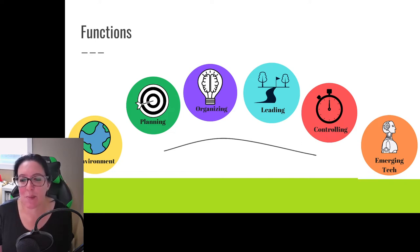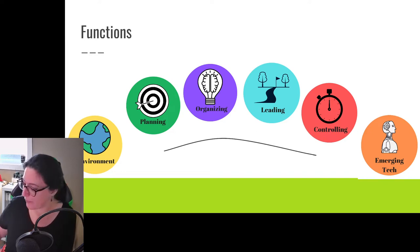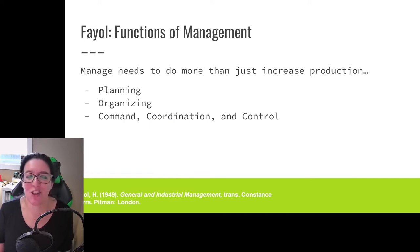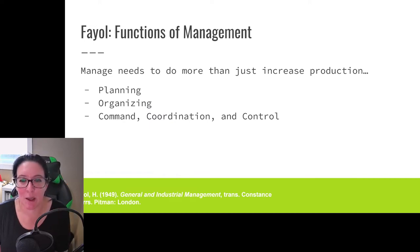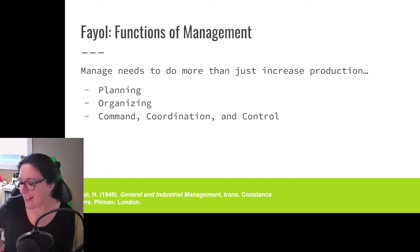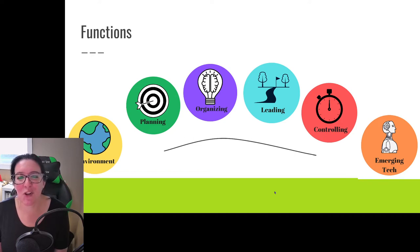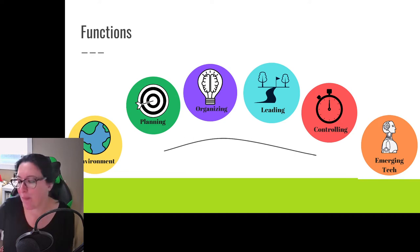Most management textbooks refer to the functions of management as planning, organizing, leading, and controlling. The terminology that Fayol used is planning, organizing, command, coordination, and control. We really just consolidated command and coordination into leading. When it comes to these functional areas of management, they came from Henry Fayol.